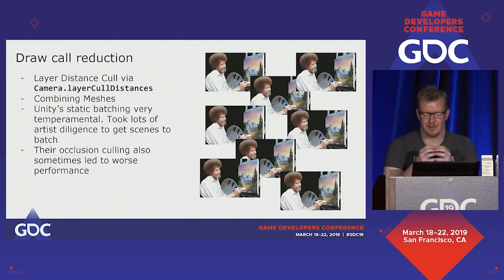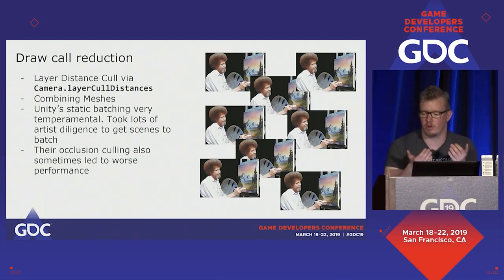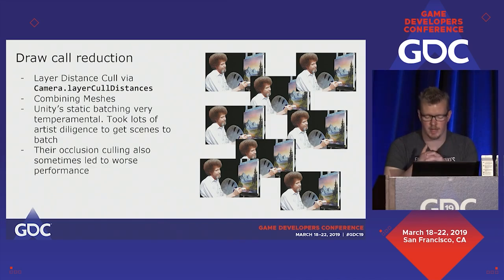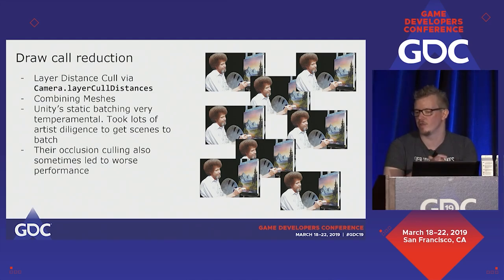Draw calls in Unity are something you really have to watch. You can use layer cull distances on the camera to say that if something is quite small, cull it at a shorter distance than the far clip plane. We would also combine meshes when necessary. Unity's static batching is quite temperamental, so it took our artists a lot of diligence and experimentation to make sure everything was batching as much as possible. Occlusion culling sometimes led to better performance, sometimes not, so we tested it on a level-by-level basis.